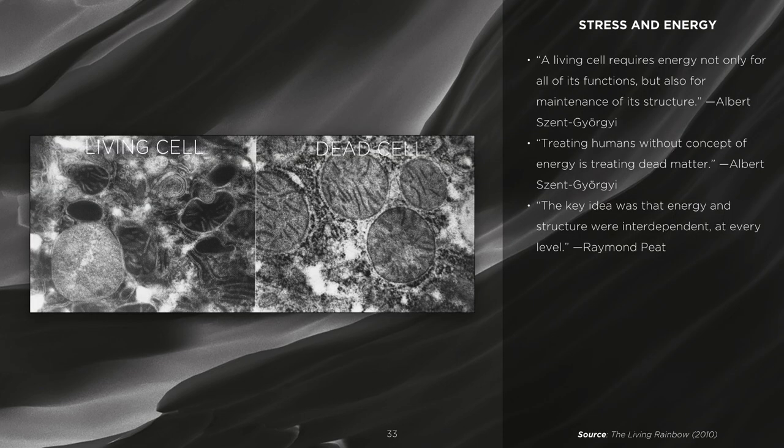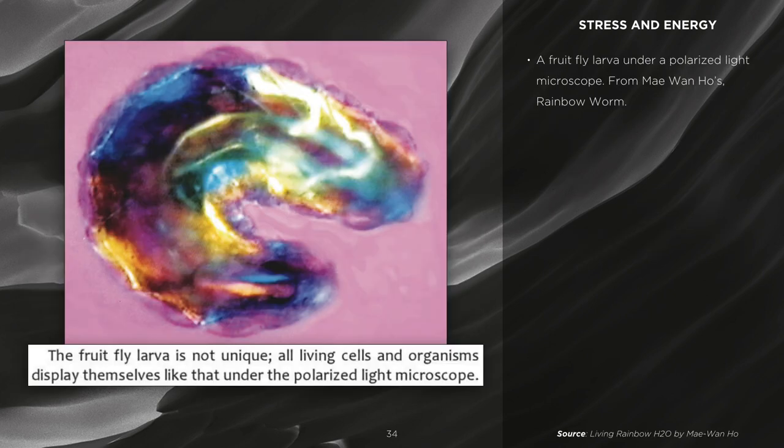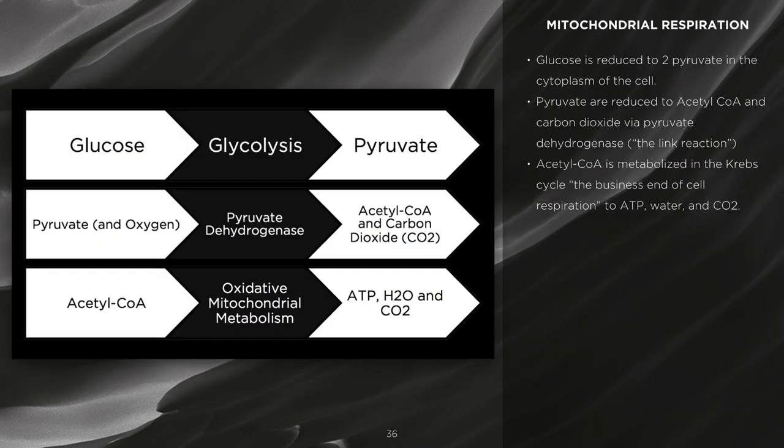Energy and stress. A few key quotes to focus on: 'A living cell requires energy not only for all its functions but also for the maintenance of its structure' — Albert St. Georgi. 'Treating humans without the concept of energy is treating dead matter' — also Albert St. Georgi. And Ray Peat's thesis: 'The key idea was that energy and structure were interdependent at every level.' What is efficient energy? Glucose is reduced to two pyruvate in the cytoplasm of the cell. Pyruvate is reduced to acetyl-CoA and carbon dioxide via pyruvate dehydrogenase, or the link reaction. Acetyl-CoA is metabolized in the Krebs cycle, or the TCA cycle — the business end of cell respiration — to ATP, water, and more carbon dioxide.